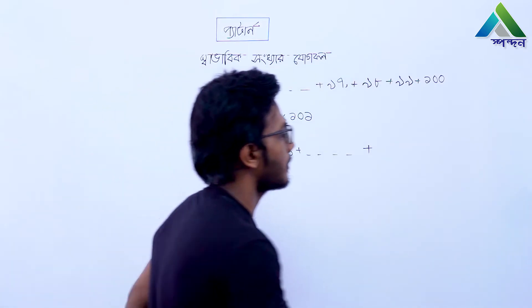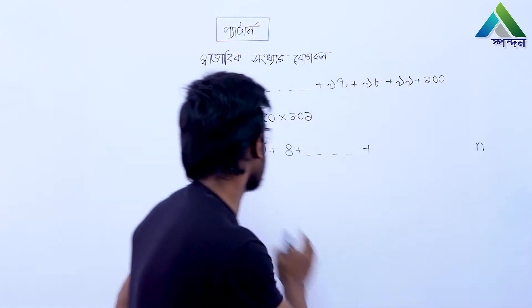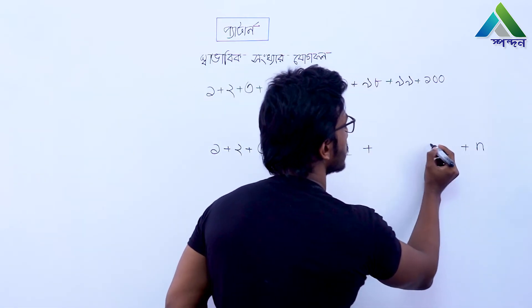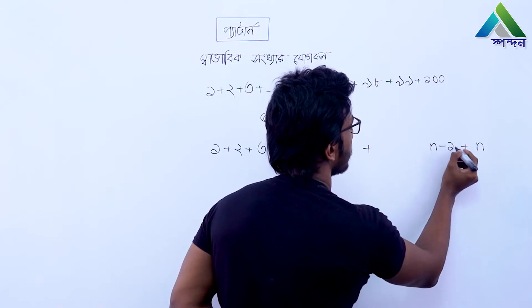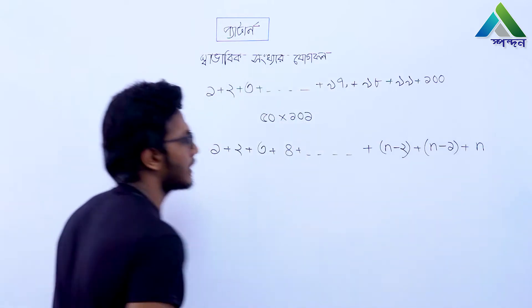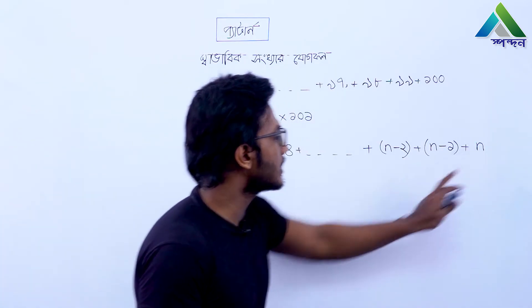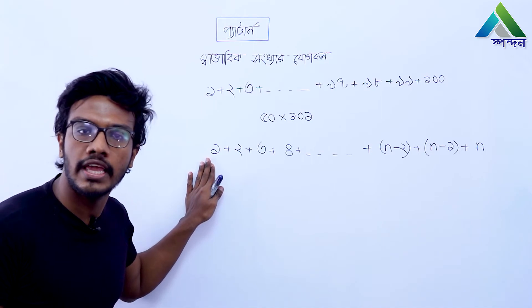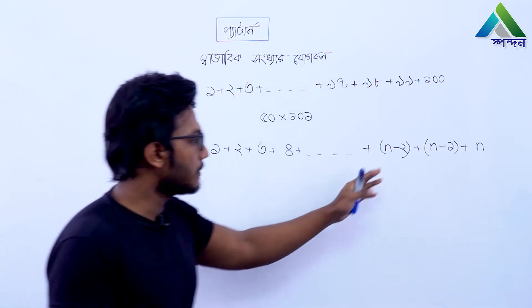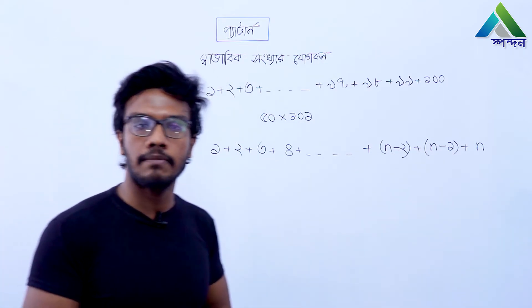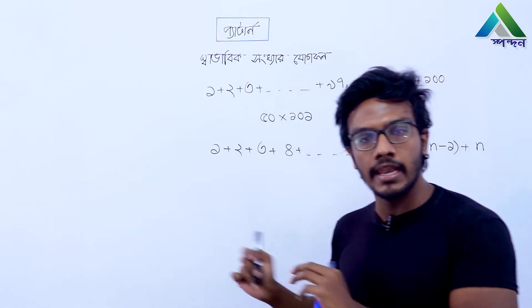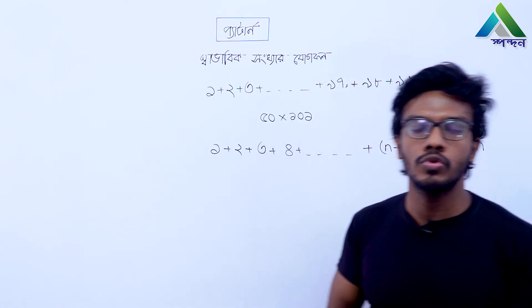আমরা বের করতে চাইছি এই শোলে n সংখক পর্যন্ত ভায় এক থেকে n পর্যন্ত স্বাভাবিক সংখ্যাগুলার জোখফল। তাহলে n-এর আগে সংখ্যাটা হবে n-1, তার আগে n-2। যদি আমরা এই সব যোগ করি, তাহলে n-এর সাথে এক যোগ করলে আসে n+1।